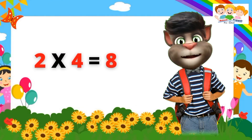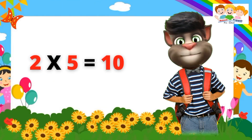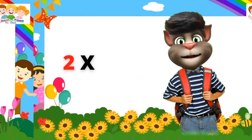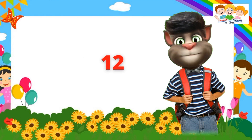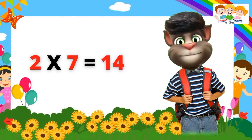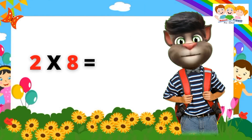Two fours are eight. Two fours are eight. Two fives are ten. Two sixes are twelve. Two sixes are twelve. Two sevens are fourteen. Two sevens are fourteen. Two eights are sixteen.